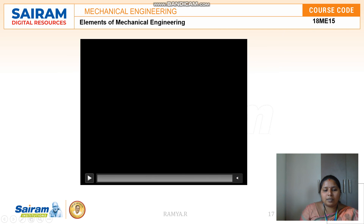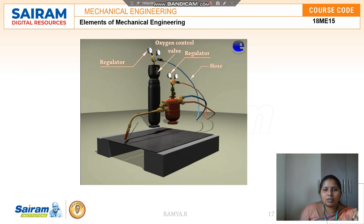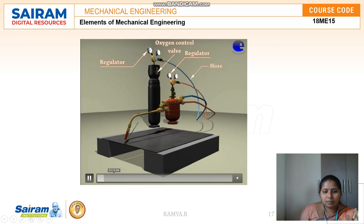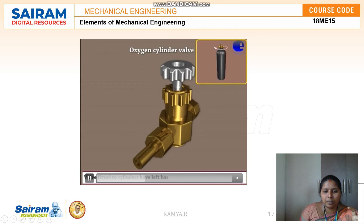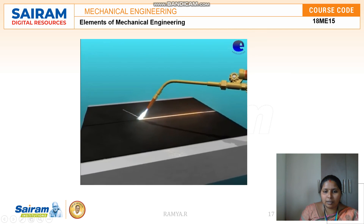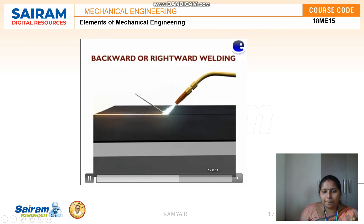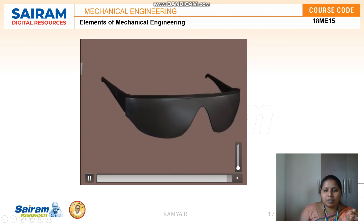Here is a video of oxyacetylene welding showing the arrangement with the oxygen cylinder, pressure valve, both gases combined, and the welding being performed. This concludes the overview of the three types of welding: MIG welding, TIG welding, and oxyacetylene welding.